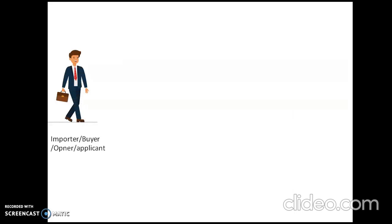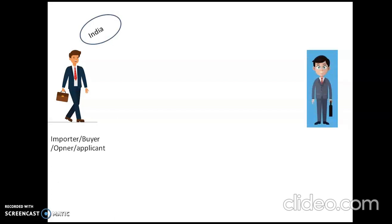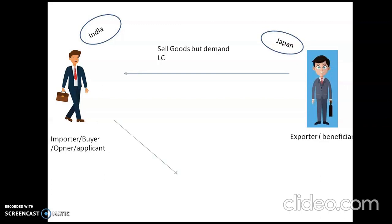For example, the importer or buyer is from India, and the exporter or beneficiary is from Japan. There is an agreement between them for selling goods — Japan is selling goods to India. But Japan demands a letter of credit guarantee. Since they are unknown to each other — they don't know about each other's financial position or goodwill — they cannot directly trust each other. So a new person enters: a middleman or agent known as the intermediary, who is from USA, a third country working as an agent between importer and exporter.